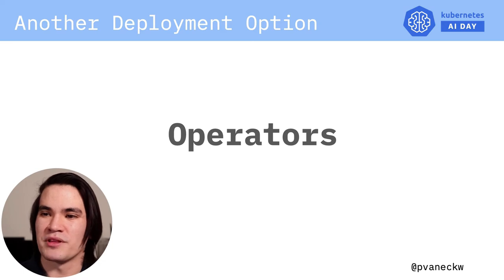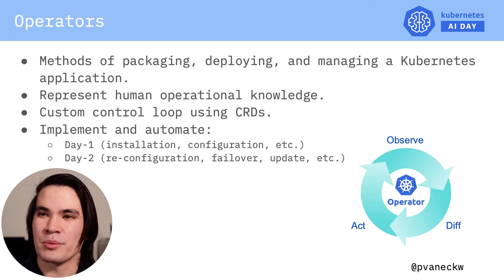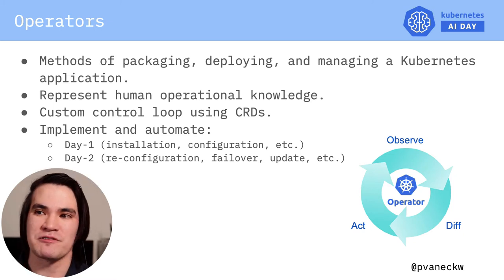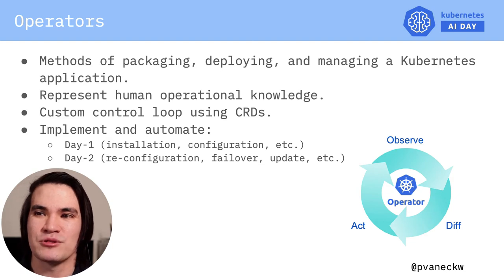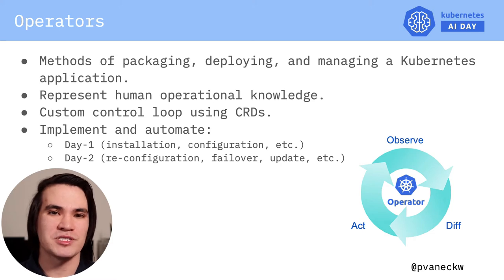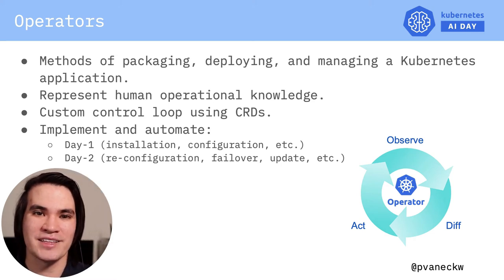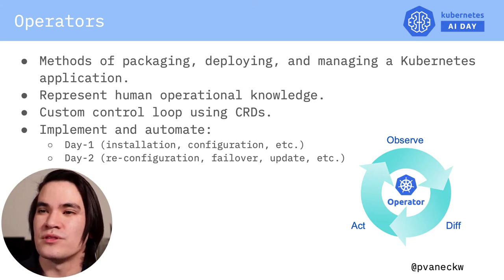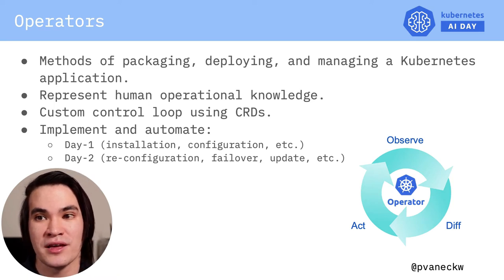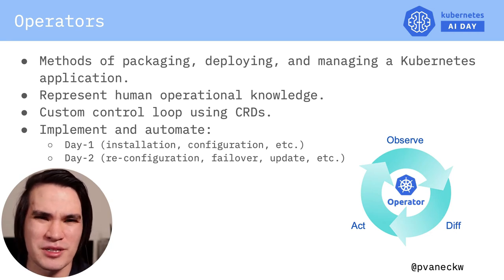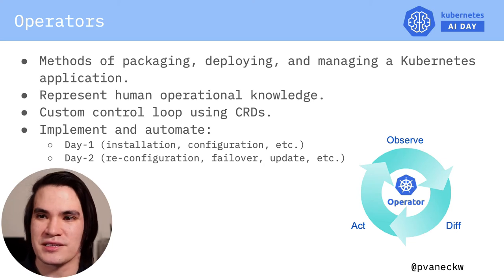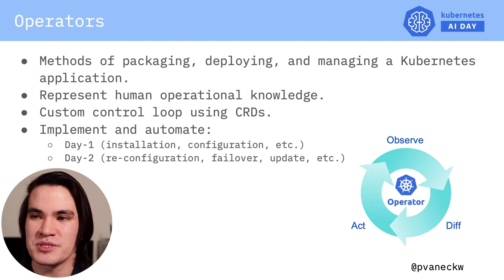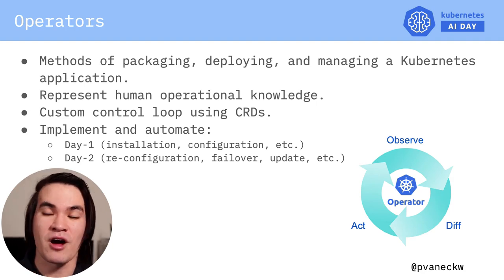Now let's move on to another deployment option: operators. Operators are a method of packaging, deploying, and managing a Kubernetes application. Kubernetes can handle stateless applications just fine by itself. However, when you start adding stateful components like a database or monitoring system, Kubernetes does not know how to scale, upgrade, and reconfigure these. These require domain-specific knowledge. The idea behind operators is to replace what would be a human operator managing stateful applications with a software operator that has the knowledge to perform all the functions a DevOps team would typically do.